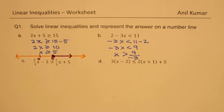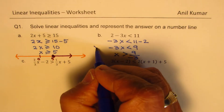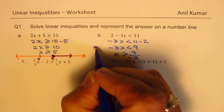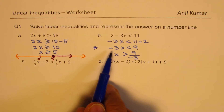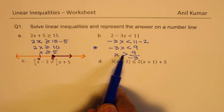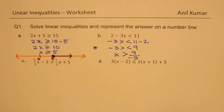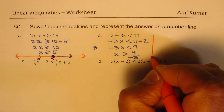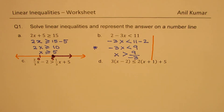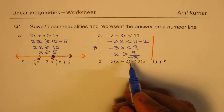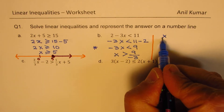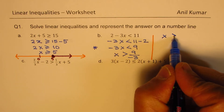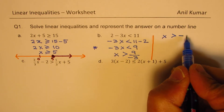This is a very important step: when you multiply or divide by a negative number, the inequality sign changes. If you don't change the sign, you'll get a wrong answer. So we get x is greater than minus 3.